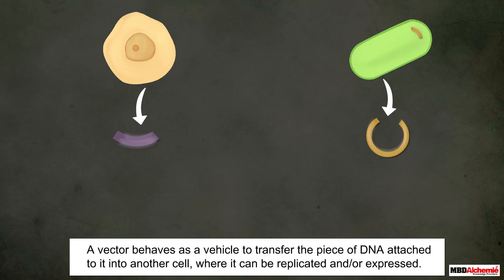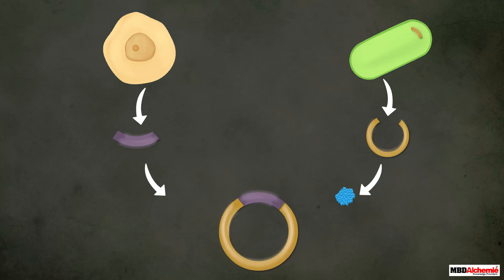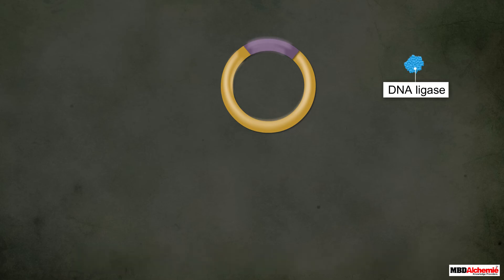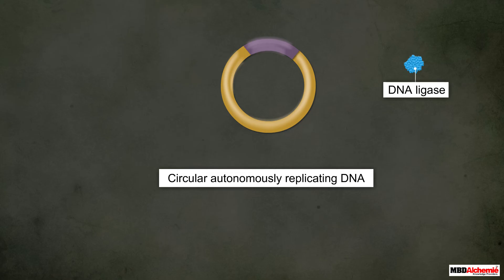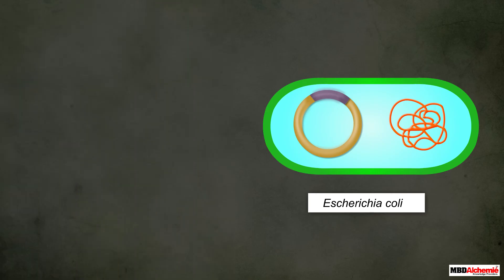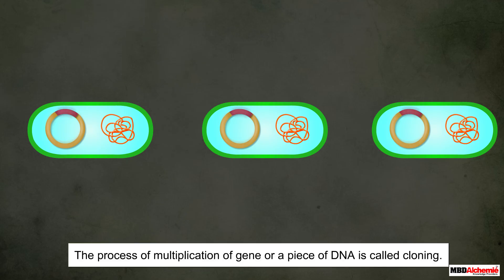The cut piece of DNA was then linked with plasmid DNA. The plasmid DNA acts as a vector — a vehicle to transfer the piece of DNA attached to it into another cell where it can be replicated and/or expressed. The linking of the fragment DNA with plasmid DNA was done with the help of another enzyme called DNA ligase, which acts as a glue to join the cut ends of DNA molecules. This resulted in a new combination of circular, autonomously replicating DNA created in vitro, known as recombinant DNA. This DNA was transferred into Escherichia coli, a bacterium closely related to Salmonella. In its new cell, the DNA made multiple copies using the host's DNA polymerase enzyme, resulting in multiple copies of the antibiotic resistance gene in E. coli. This process of multiplication of a gene or piece of DNA was called cloning.